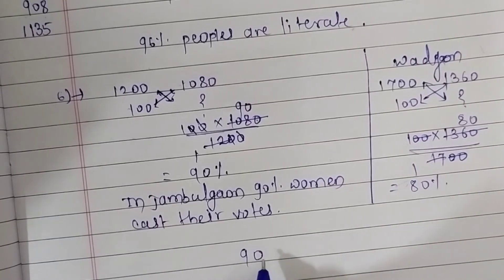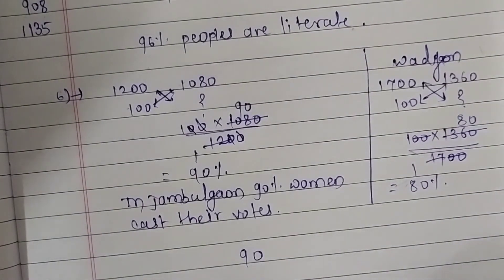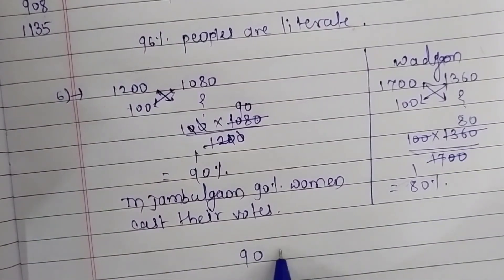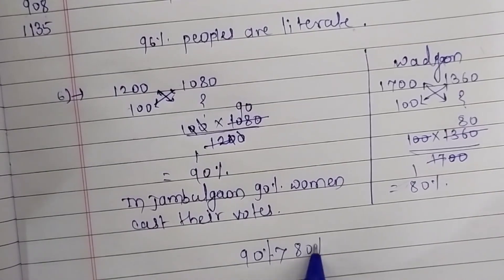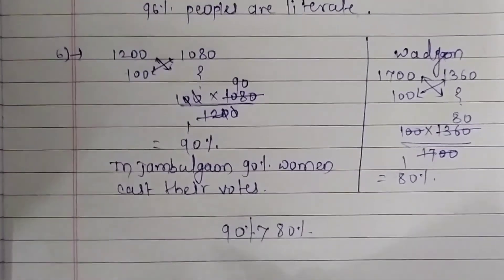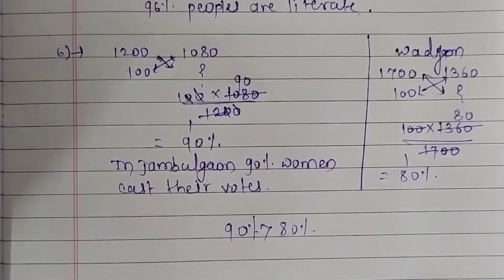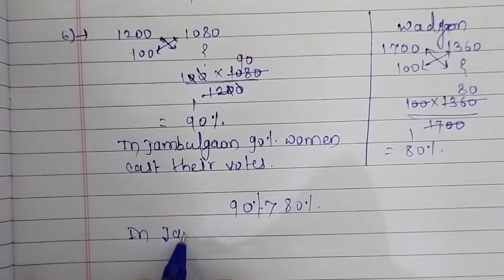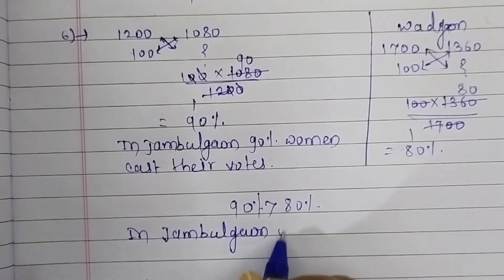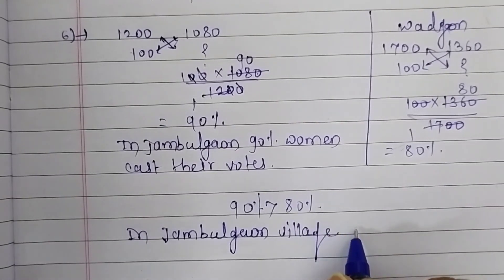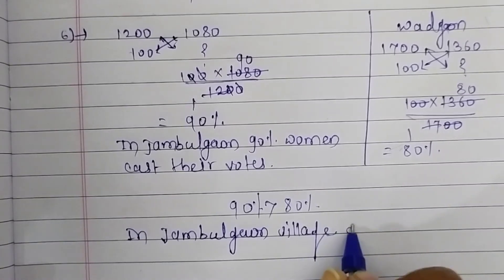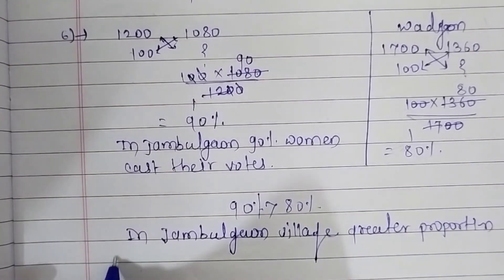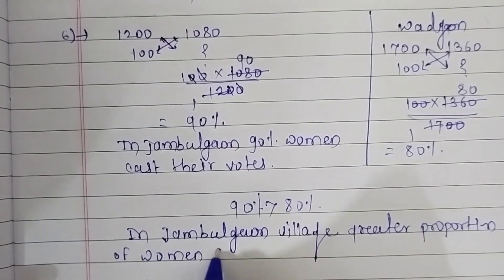When we compare both percentages — the percentage of Jambulgao and the percentage of Vadgao — we find that 90% is greater than 80%. So we can say that in Jambulgao village, a greater proportion of women cast their votes.